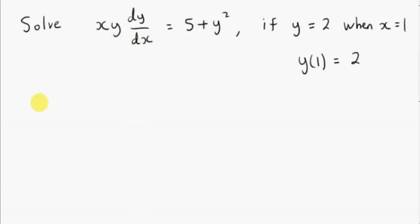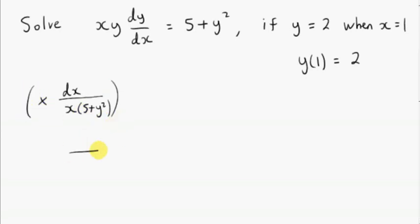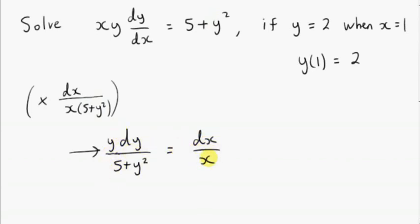How would you do that here? You could multiply both sides by dx over x — to get rid of the x and the dx on the left-hand side — and also multiply by 1 over 5 plus y squared, to get rid of the 5 plus y squared on the right-hand side. The x will cancel, the dx's will cancel, and on the left-hand side you will get y dy over 5 plus y squared. The y hasn't cancelled — the y is still here. On the right-hand side, multiplying by 5 plus y squared cancels it to give dx over x. So now y's are on one side and x's are on the other side.